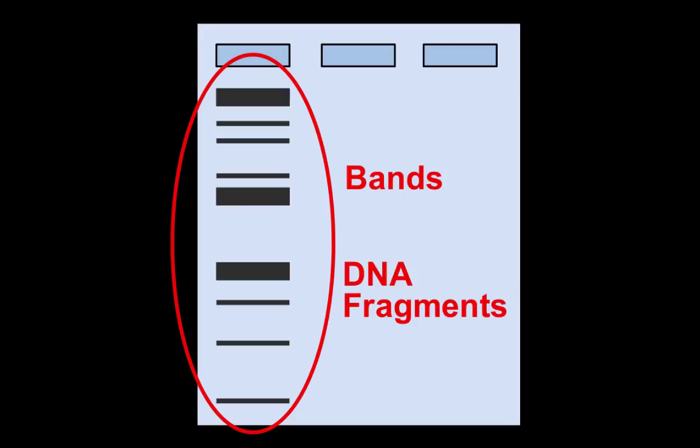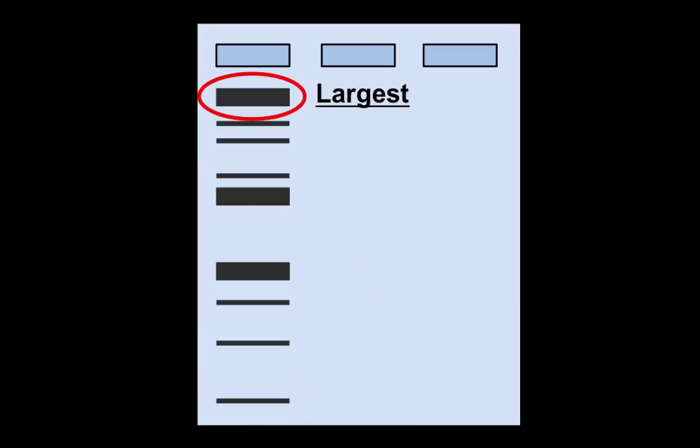Each one of these bands represents a different size DNA fragment. Remember, the larger the fragment, the slower it's going to move through this gel. So the largest fragment is going to be this one right here — the fact that it has not moved very far indicates it is the largest. The smallest fragment is going to be this one at the bottom, because it has been able to move the fastest through the briar-patch-like gel, and therefore it is the smallest.